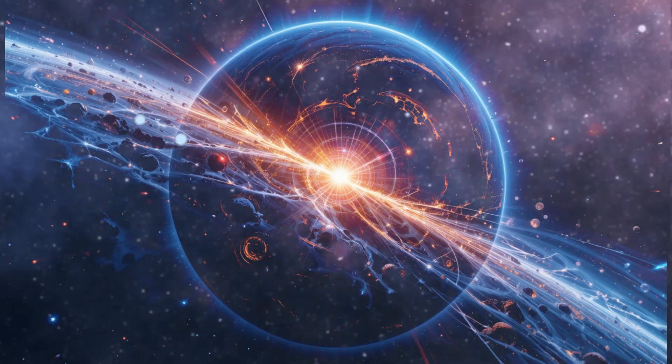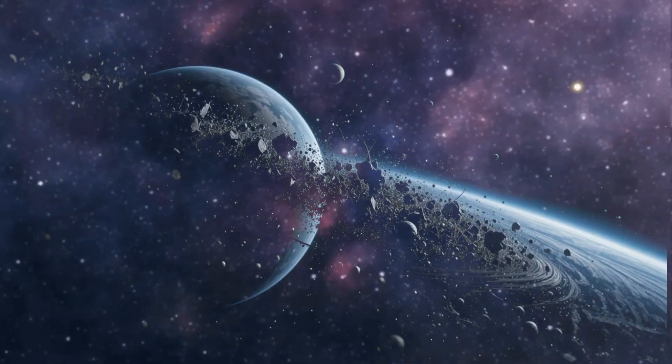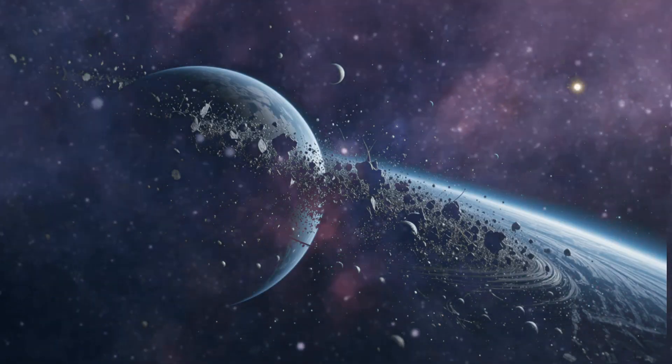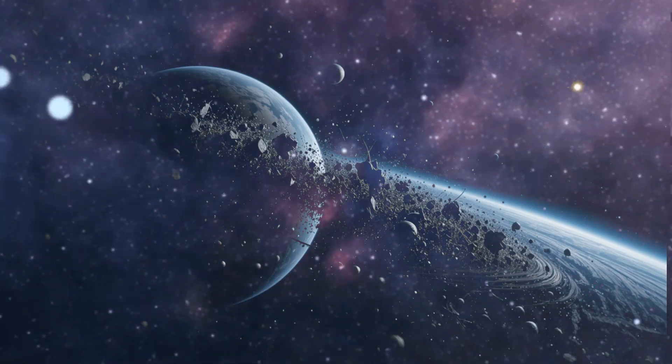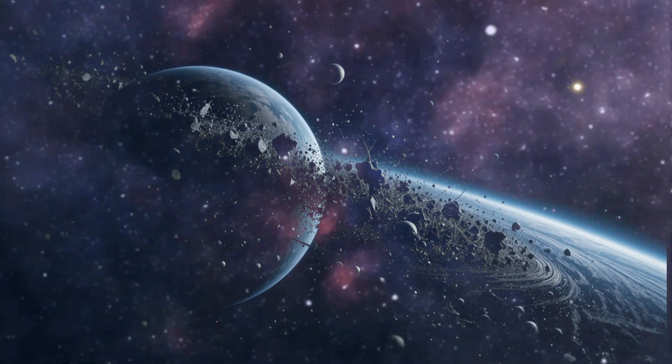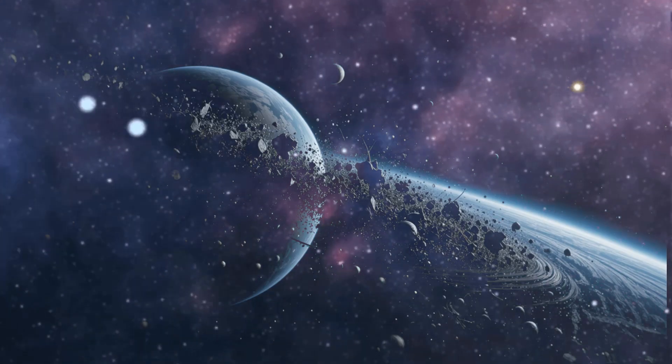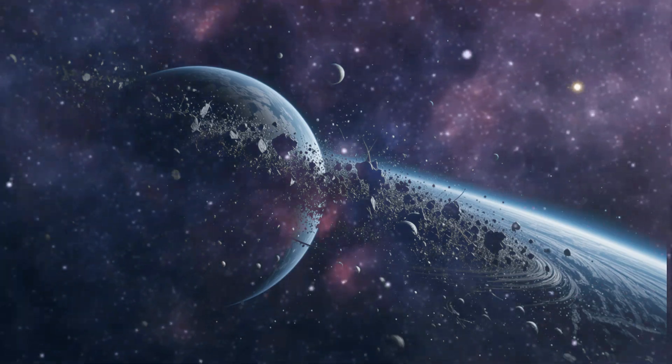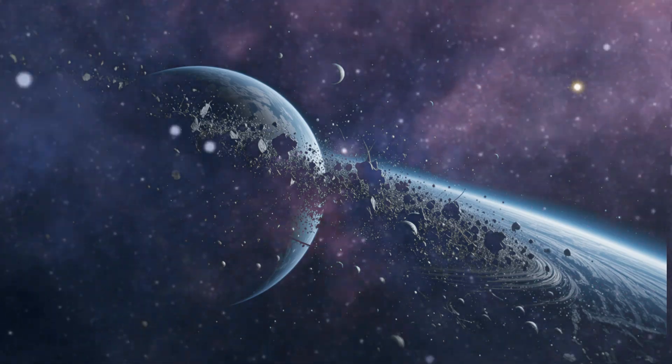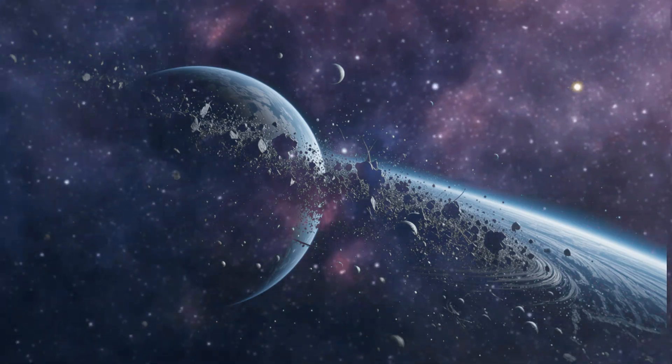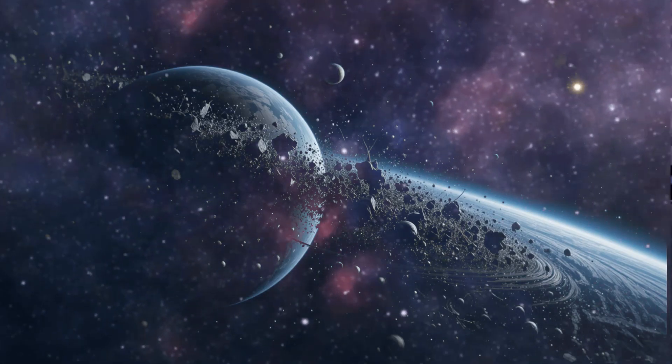Many of these exoplanets are orbiting M-type stars, which are the smallest stars in the main sequence, commonly referred to as red dwarfs. These stars are the most prevalent in the Milky Way but have low luminosity, making them difficult to detect and complicating our search for planets. Red dwarfs come in various classifications and names based on their size and temperature, such as M-dwarfs.